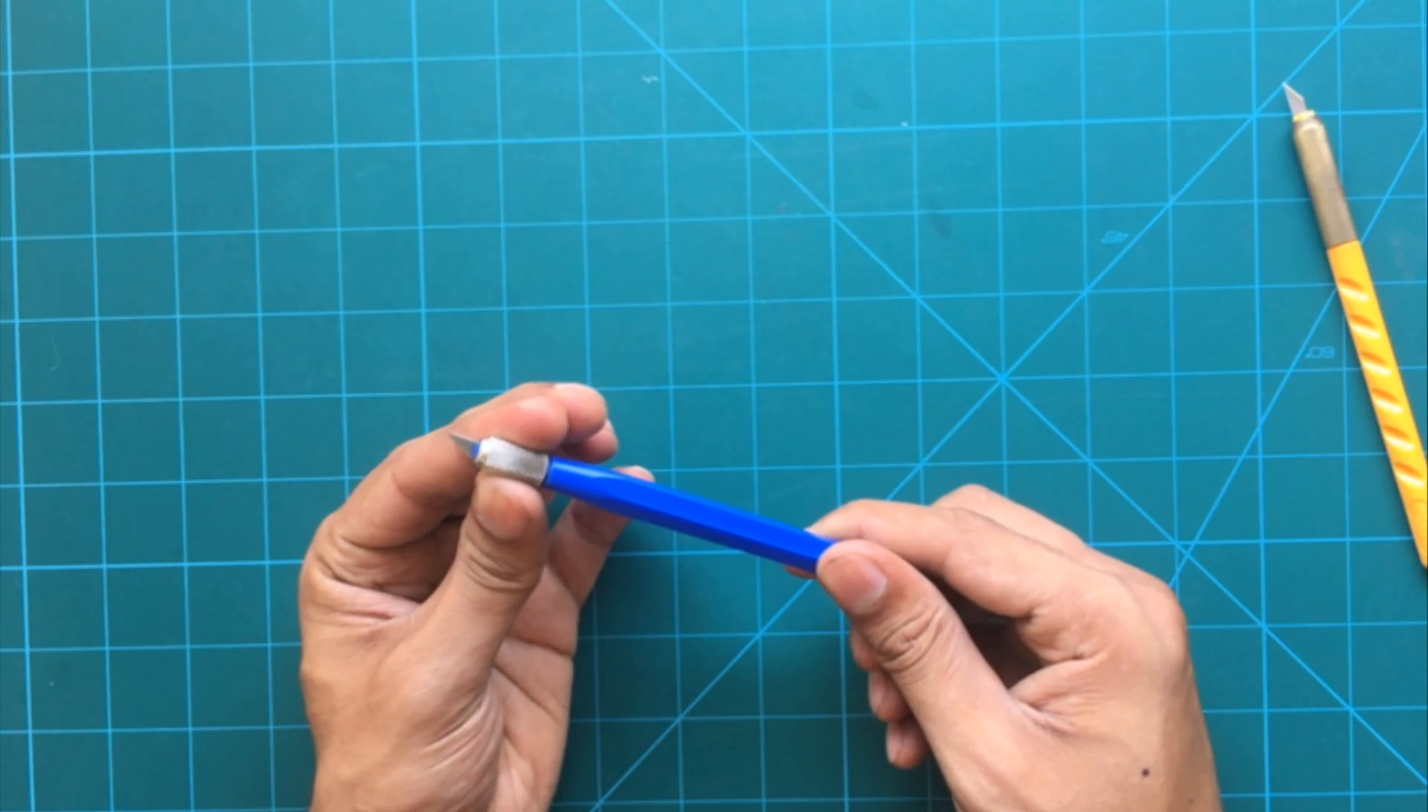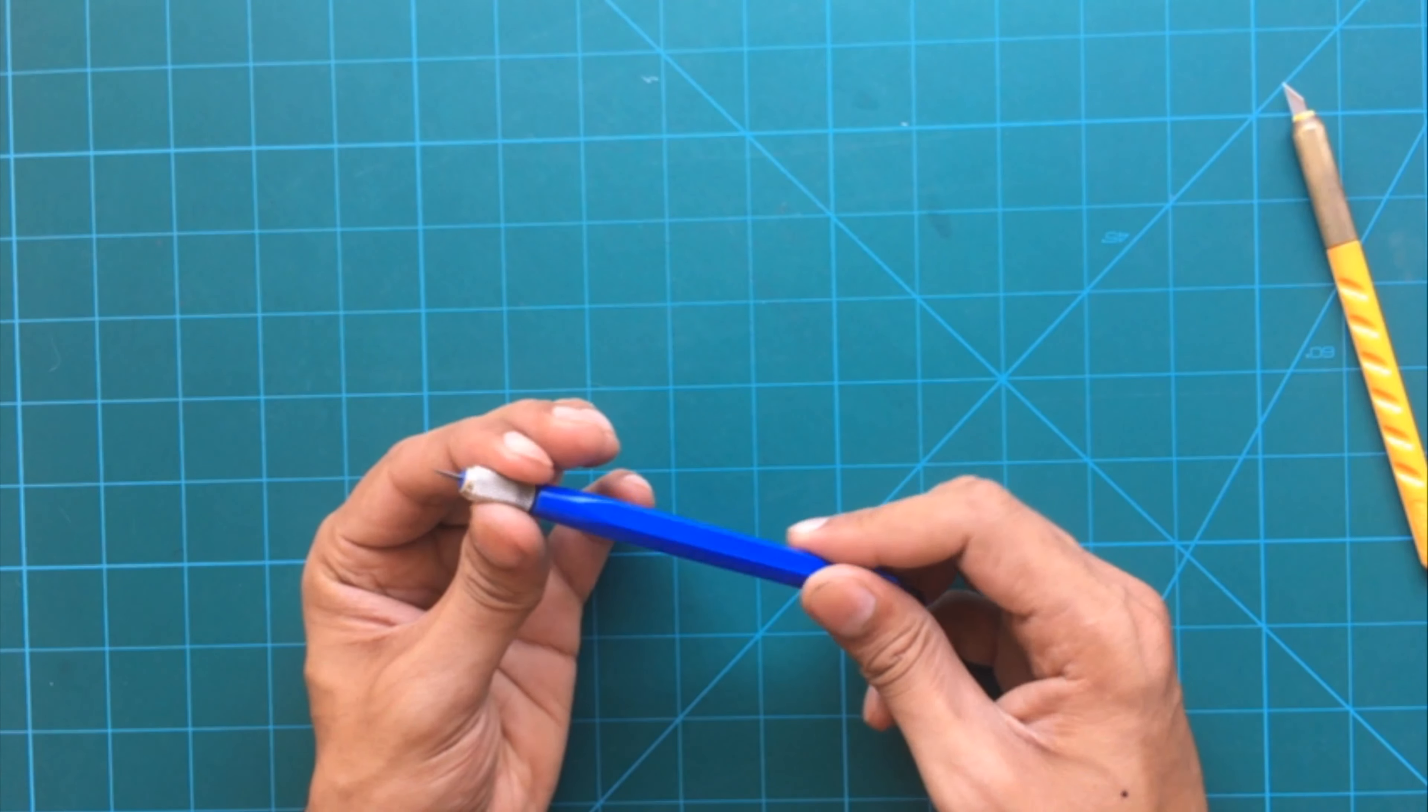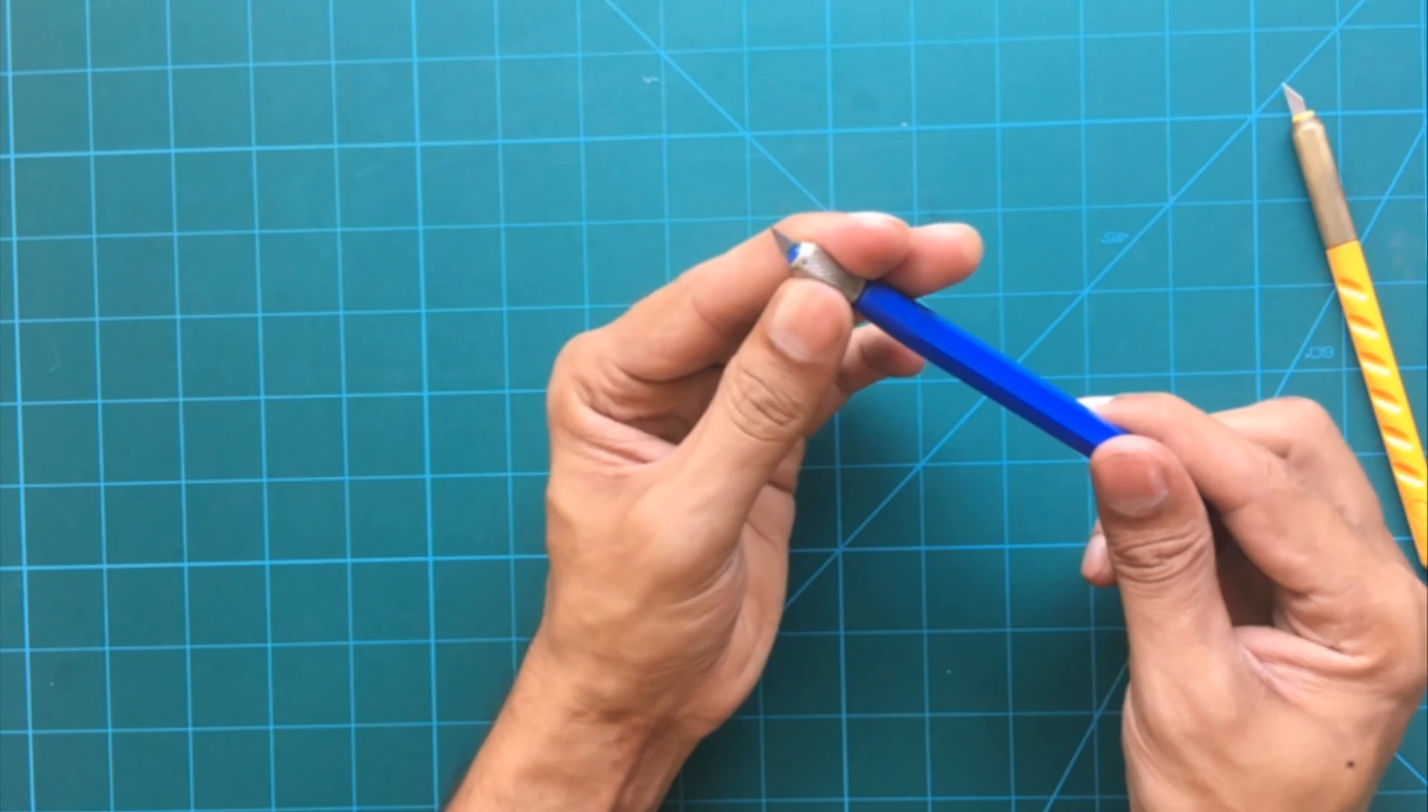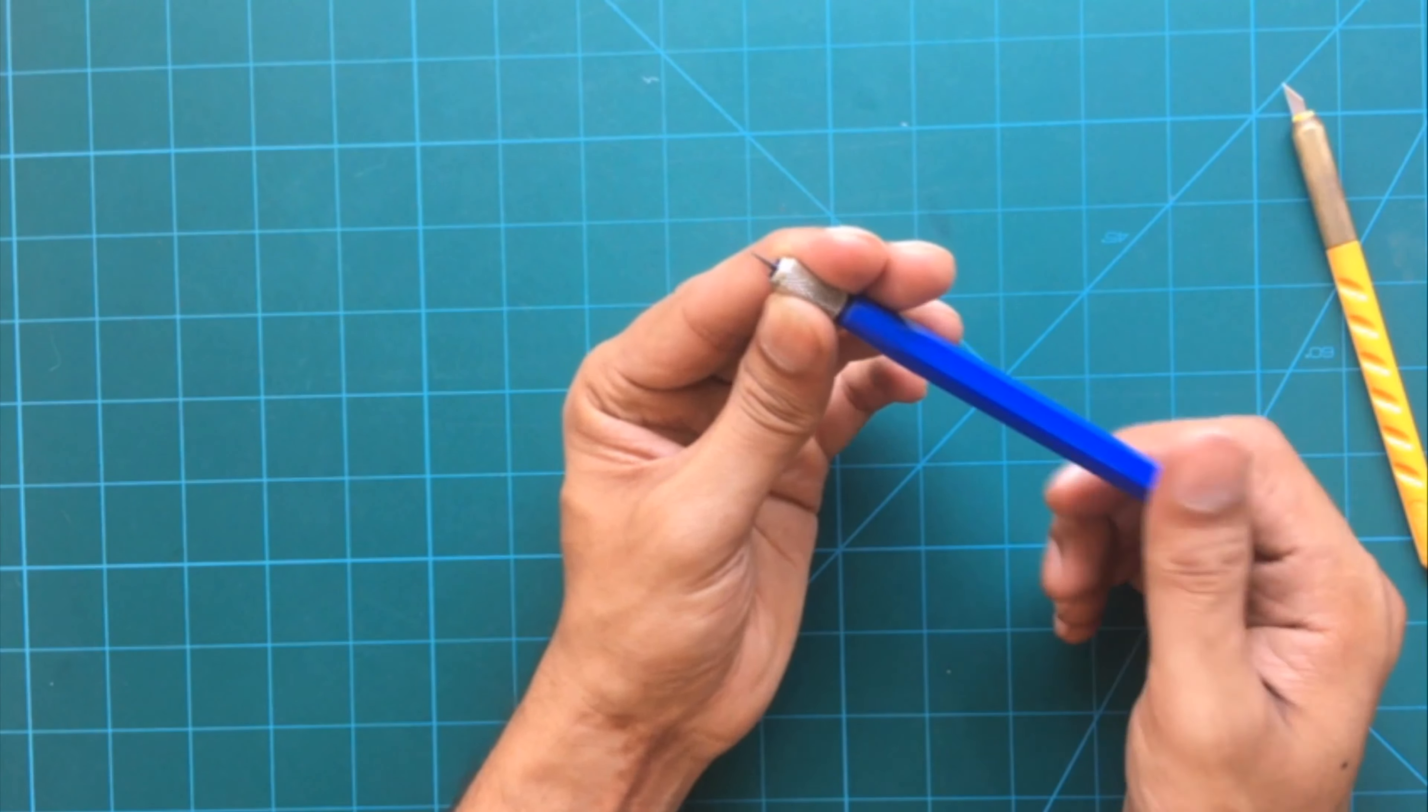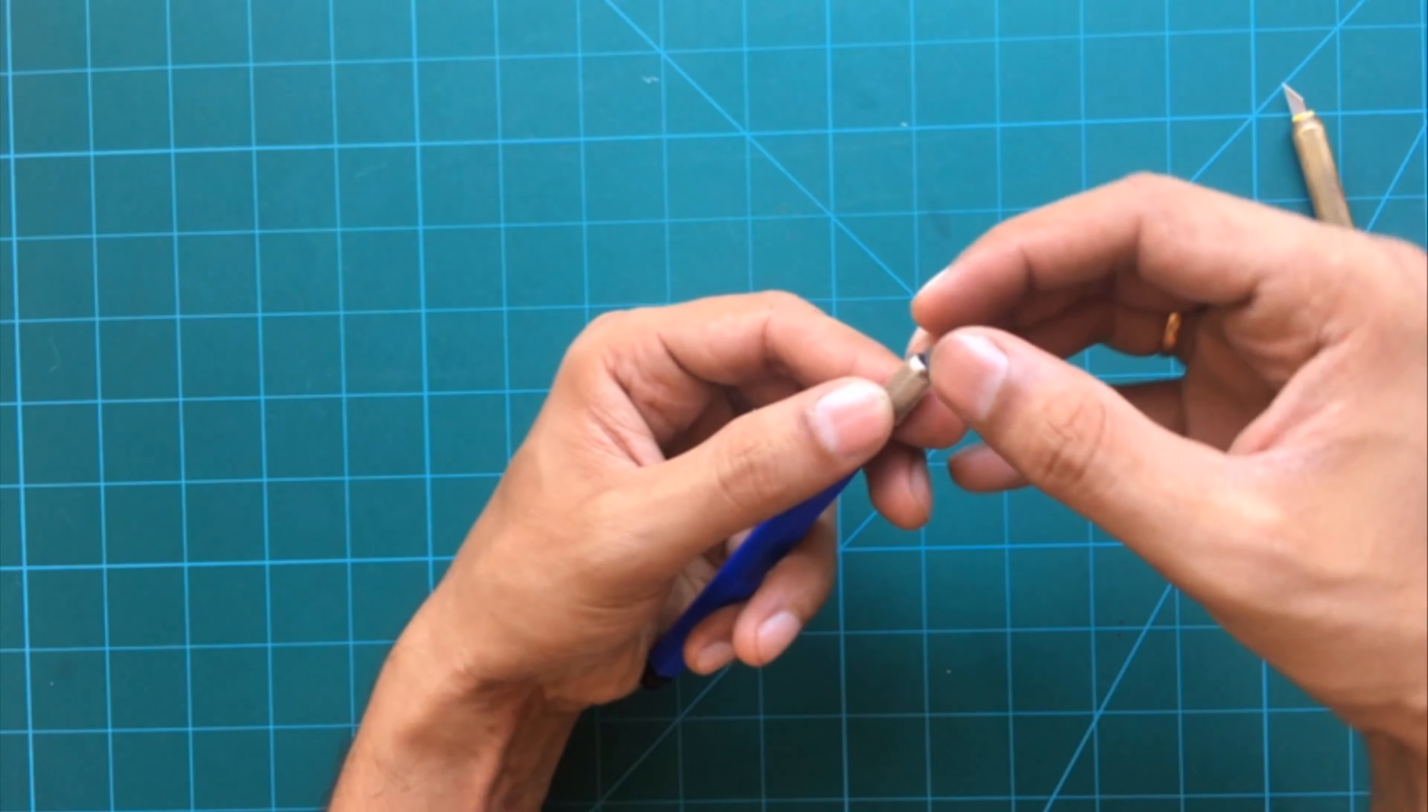While both the knives use almost similar kind of blades, the blue knife is basically a cheaper version of the yellow knife. Also, the grip on the blue knife is a little rougher than the knives we have seen so far. So, if you are engaged in long sessions of paper cutting, then it might cause discomfort to your fingers.